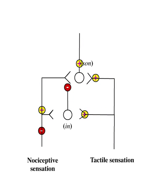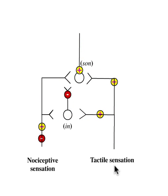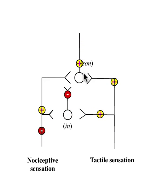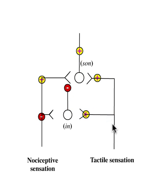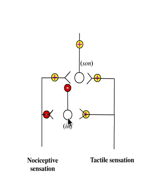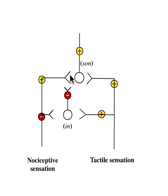However, the scenario changes when there is tactile stimulation. The tactile sensation, transmitted as neural impulses in the A-beta fibers, makes two connections in the spinal cord: the main one is to the second order neuron and the secondary connection is to the interneuron. Both these stimulations are excitatory. This means that the interneuron, which is an inhibitory neuron, gets excited by the tactile sensation, leading to the interneuron inhibiting the nociceptive impulses more.